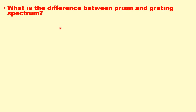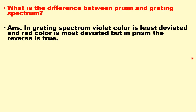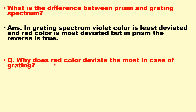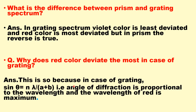What is the difference between prism and grating spectrum? In a grating spectrum, violet color is least deviated and red color is most deviated, but in a prism it is reversed. Why does red color deviate the most in a grating? From the equation (a + b) sin θ = nλ, sin θ is directly proportional to λ. Since λ is highest for red color, the deviation is highest for red in grating.